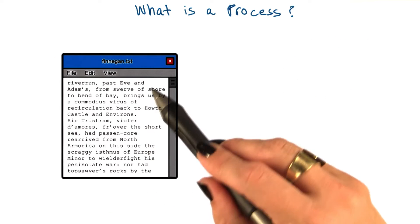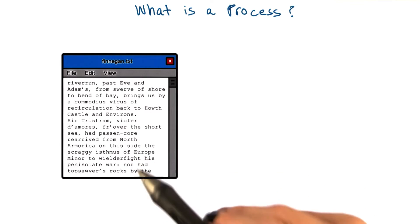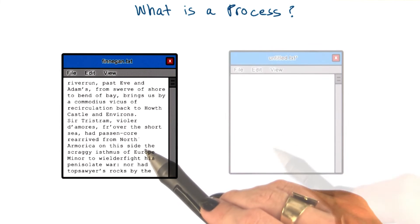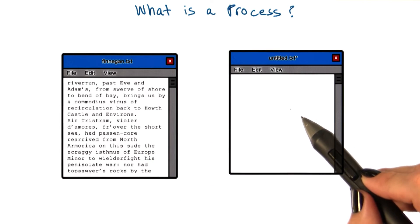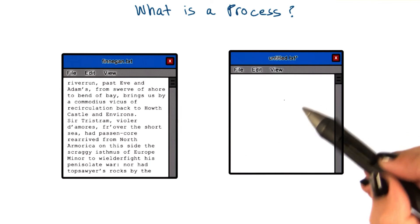For instance, a process can be one instance of the word editor program. Here you're displaying some notes from a previous lecture. And perhaps you're just reviewing it, you're not really modifying this. And then you can have a second process, another instance of the exact same word editor program, to take notes from this lecture.